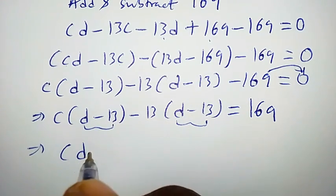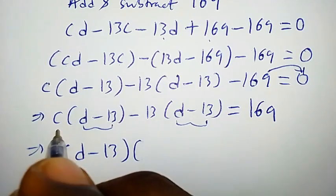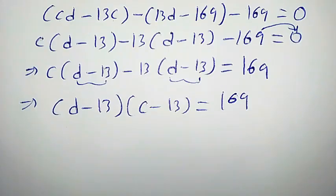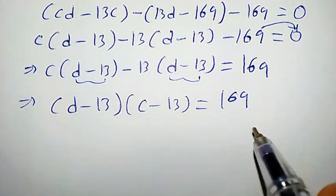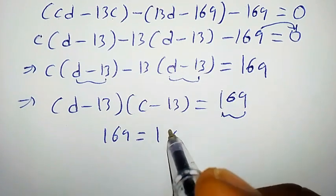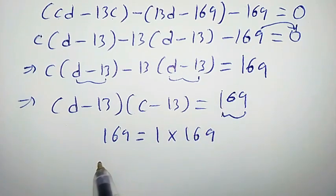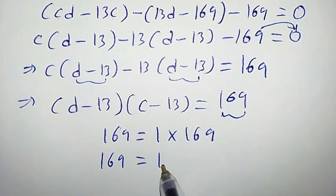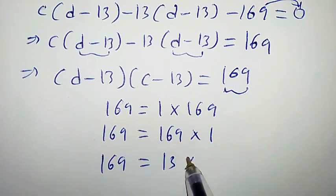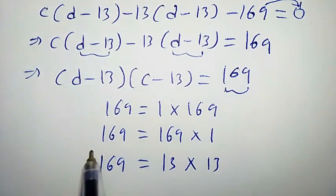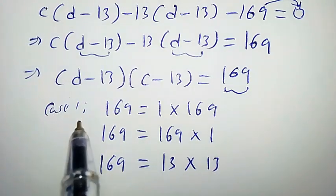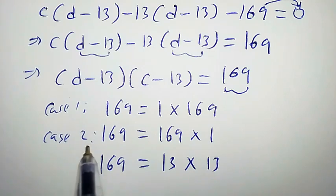We are going to have d minus 13 times c minus 13 equal to 169. Now let us focus on 169. 169 can be written as 1 times 169, or as 169 times 1, or as 13 times 13. We will consider each of these cases — let us call them case 1, case 2, and case 3.